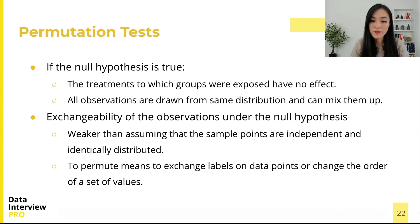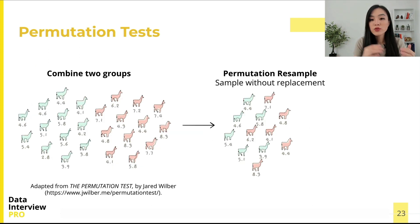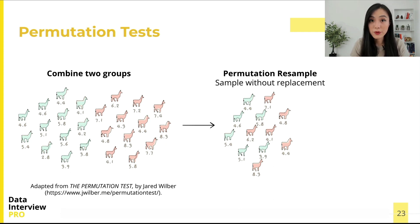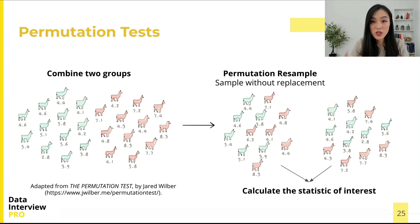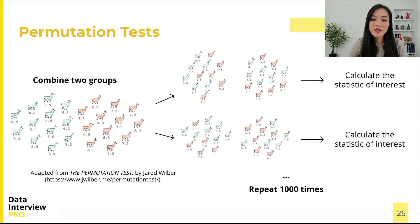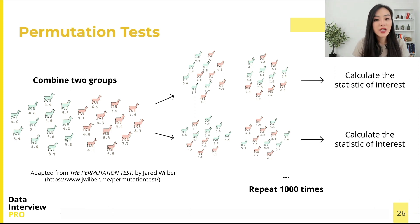To permute means to exchange labels on data points or change the order of a set of values. We combine the observations from two groups, then create a permutation resample by drawing a certain number of observations without replacement from the pooled data to form one sample, leaving the remaining observations as the second sample. We then calculate the statistic of interest — for example, the difference in means — and repeat this process many times, such as a thousand or more.